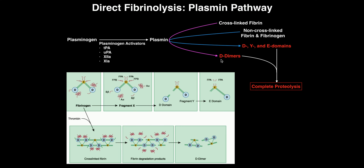D-dimers are the main fibrin degradation products when we start with cross-linked fibrin. And those would degrade further.